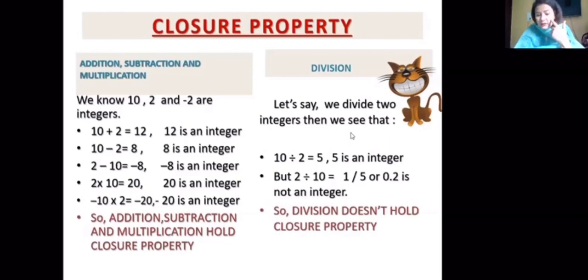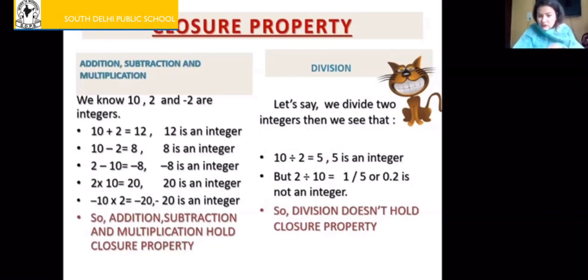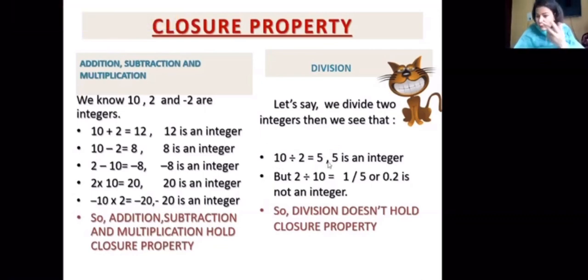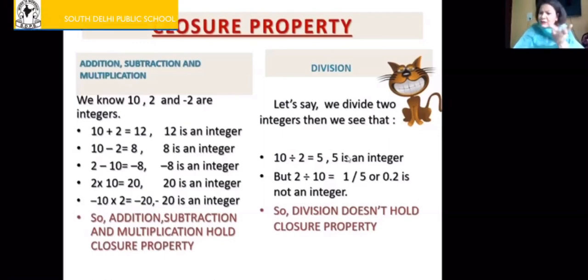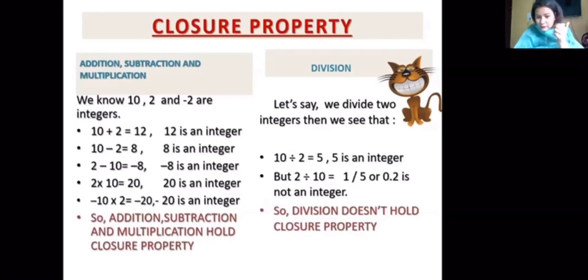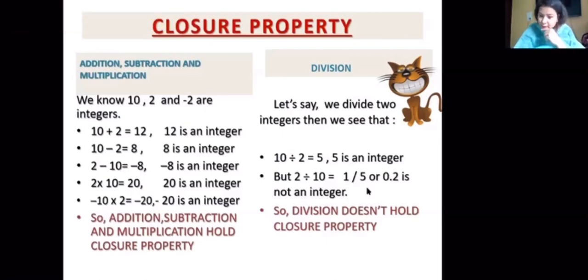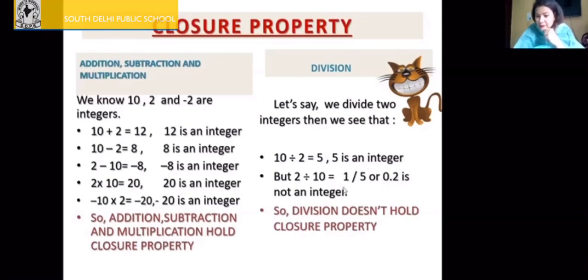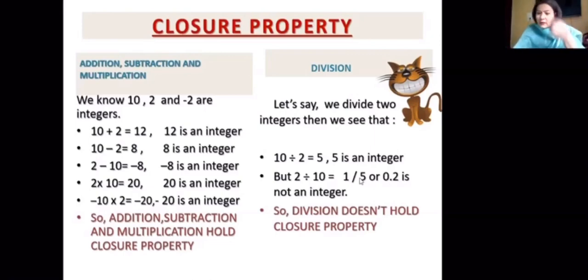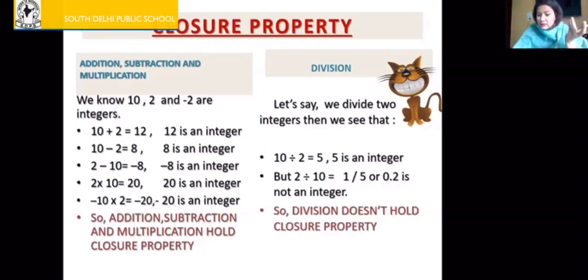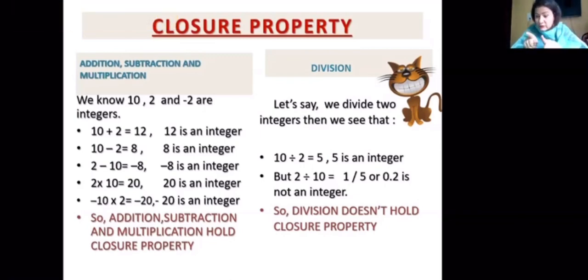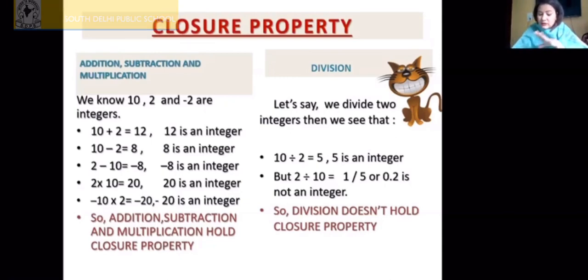So addition, subtraction, and multiplication hold the closure property — they are all closed. But let's check division. 10 and 2 are integers. 10 divided by 2 gives 5, and 5 is an integer. But if we interchange: 2 divided by 10 gives 1/5 or 0.2, which is a decimal or fraction — not an integer. So division does not hold the closure property, because when we divide two integers, we don't always get an integer. Division is not closed.